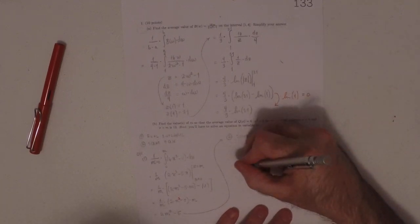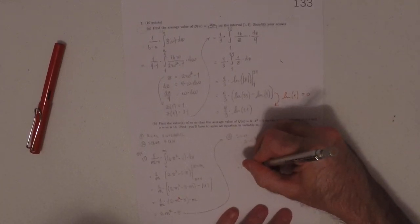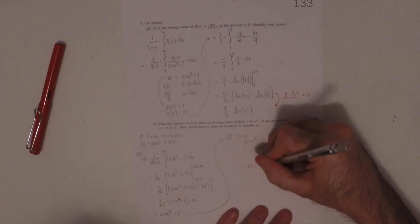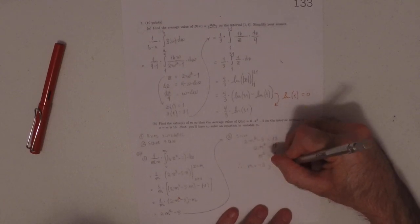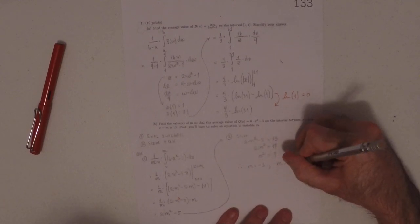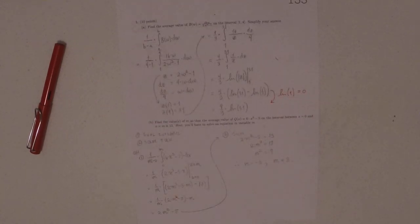So m squared is 9. And there's two possibilities to that. There's m is negative 3 and m is 3. So that's the answer to the question.